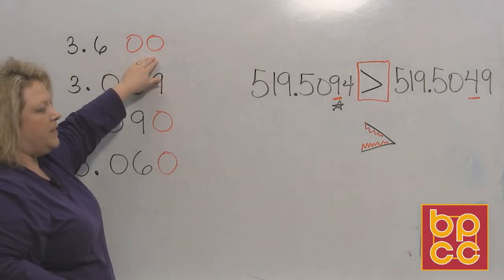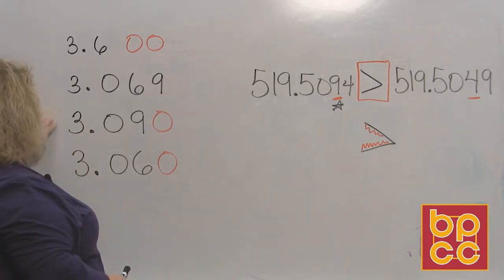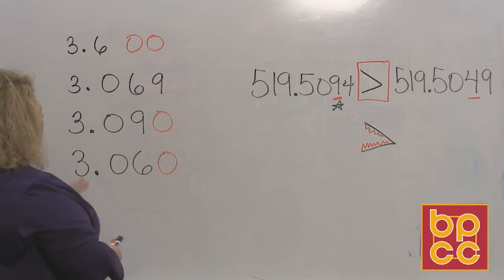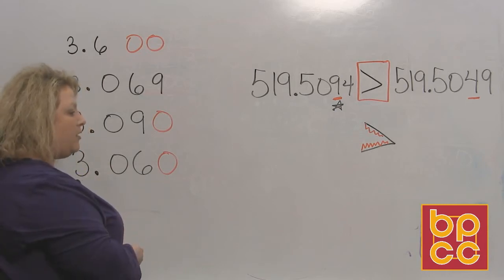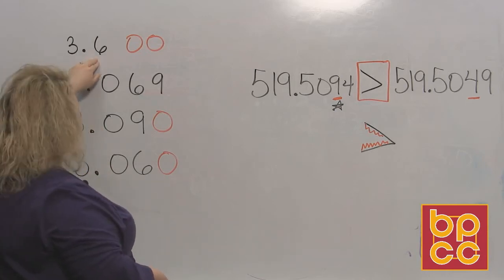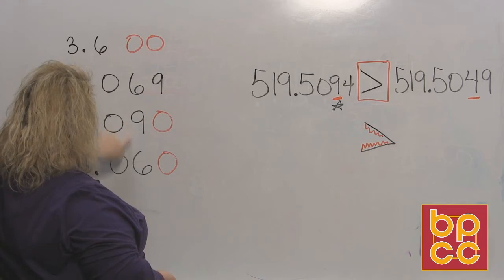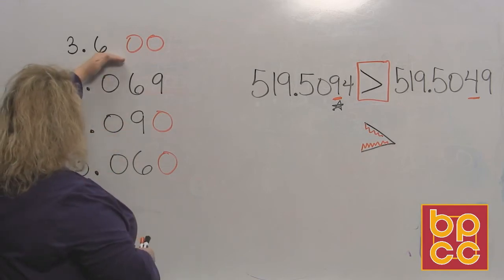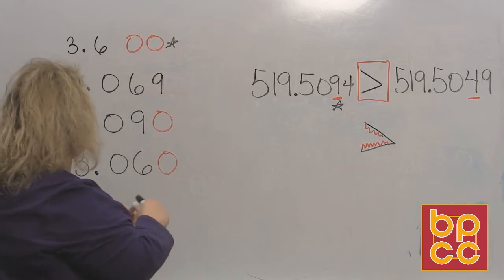If I look at the first digit, the whole number, they all have a three in front, so I can't go by that number. The next one I look at is the first digit behind. I have a six and then a bunch of zeros. Now I'm looking for the number that's the smallest, so the six can't be it. I keep going. My next row I see is a zero, a six, a nine, and a six. Let's keep going because this number is out.